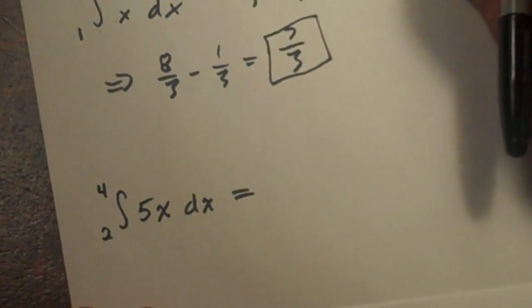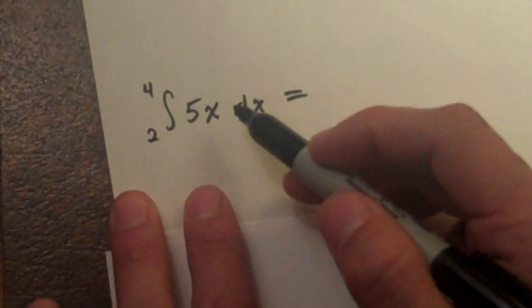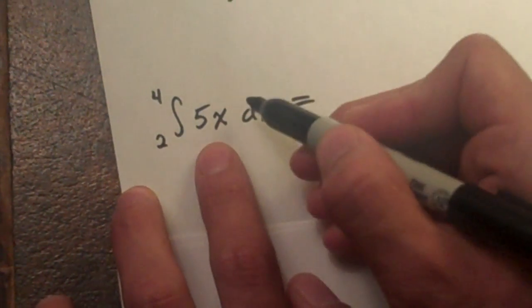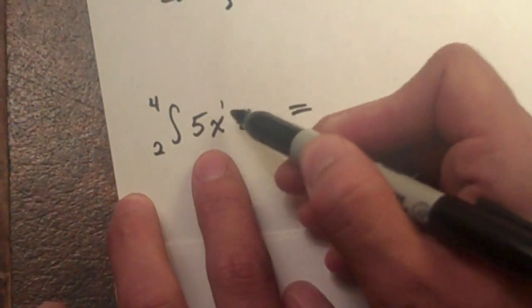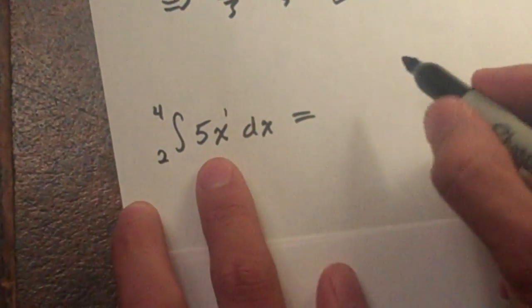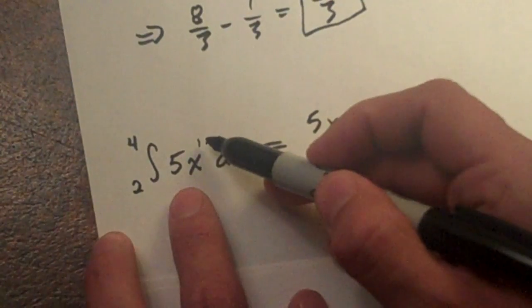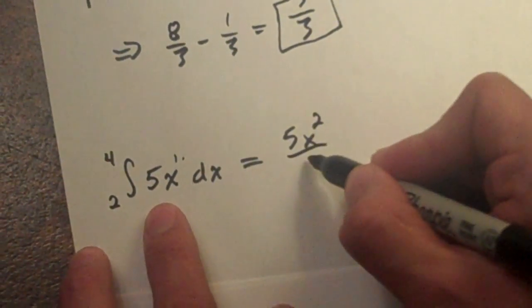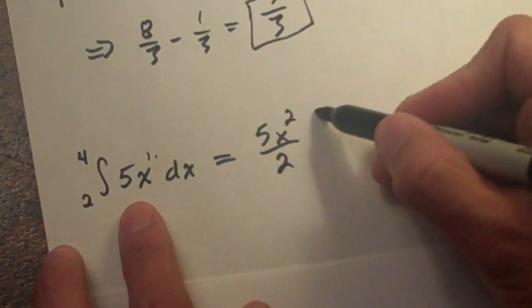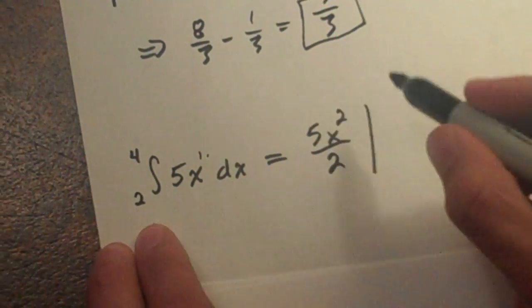Let's do another one real quick. Same thing, kind of fill in the blanks. So right here we have 5x to the power of 1. It's not there but that's just implied that it's to the power of 1. So we do 5x. Our n is 1, so 1 plus 1 is 2, 2 over 2. And then from a to b which is from 2 to 4.